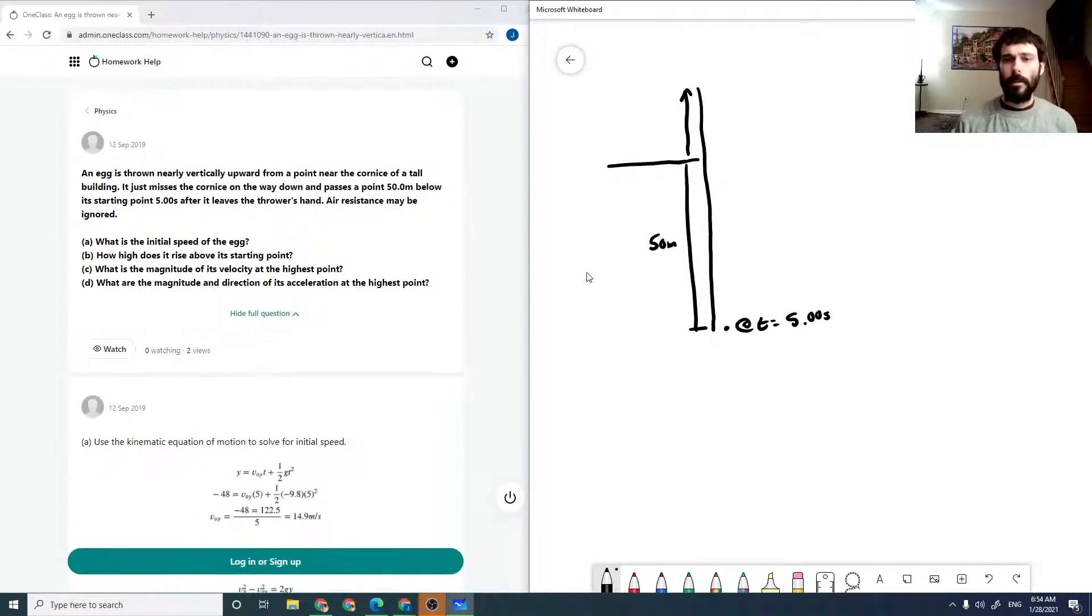So the egg is initially thrown upwards with some velocity so we're looking for its initial speed for part a. So our acceleration is minus g in all cases, so we can use xf is xi plus vit plus one half at squared.